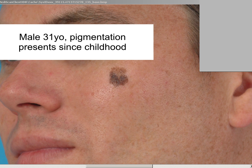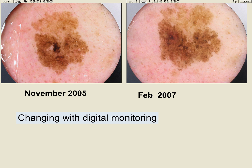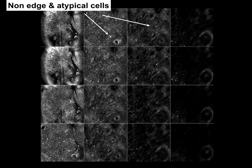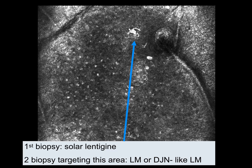Lentigo maligna is also variable in space, and an interesting way is to look at a lesion over time. For example, this pigmentation was said to be present since childhood, but was changing quite widely on digital monitoring. A previous biopsy showed just solar lentigo. On confocal microscopy, you can see a stack of images from the stratum corneum to the junction and the beginning of the dermis. With very nice lentiginous pigmentation it looks like solar lentigo, but when you move to another area, you can already see — even without being an expert in confocal — a completely different picture with atypical cells and junction changes that are quite obvious. When that area was biopsied, the pathologist said it was lentigo maligna or a dysplastic junctional-like lentigo maligna lesion.